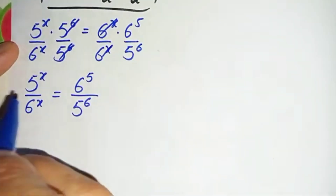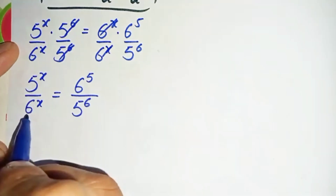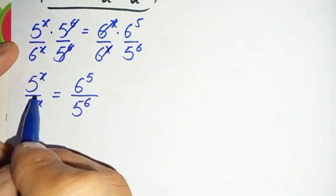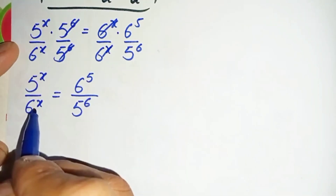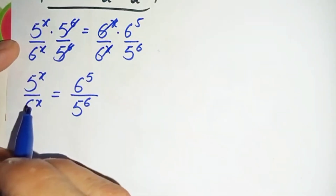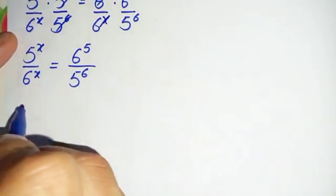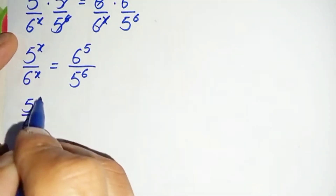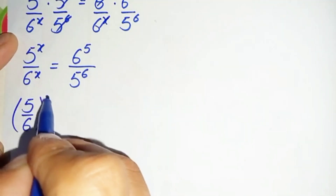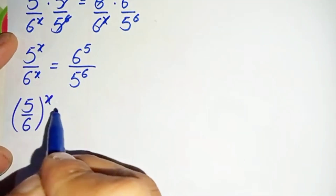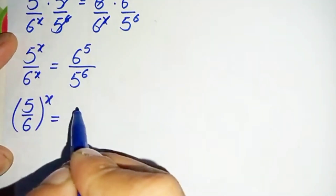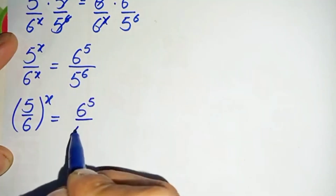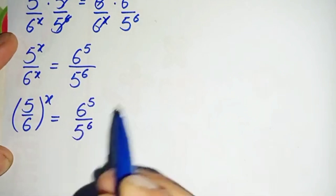On the right-hand side we have 6 raised to power 5 divided by 5 raised to power 6. On the left-hand side, the numerator and denominator have the same power x, so we take out the power x, and this becomes 5 divided by 6, whole raised to power x, is equal to 6 raised to power 5 divided by 5 raised to power 6.